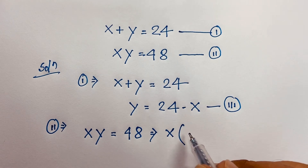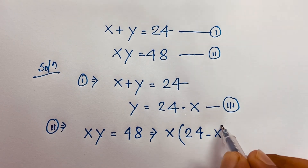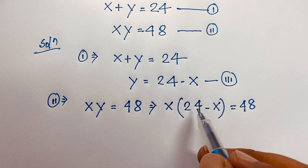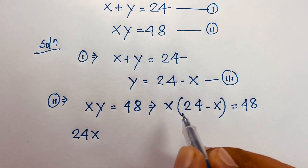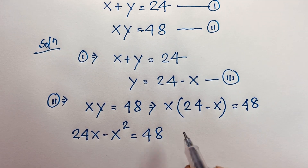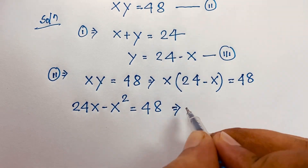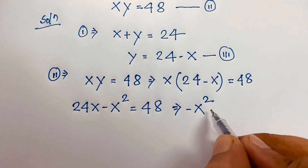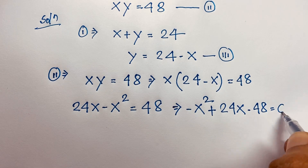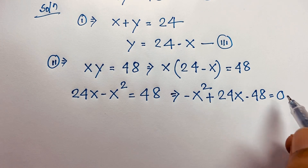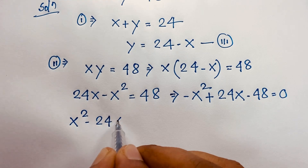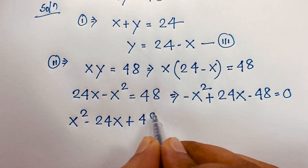So it will be x times (24 minus x) is equal to 48. Expanding: 24x minus x squared is equal to 48. This gives the quadratic equation: negative x squared plus 24x minus 48 is equal to 0.